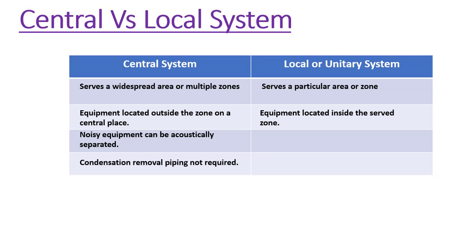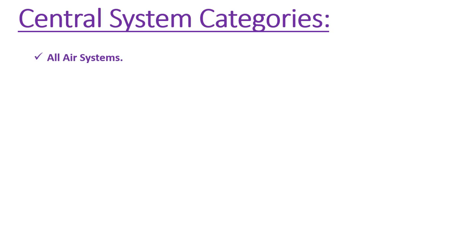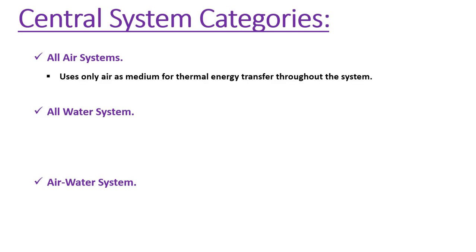Another benefit of central systems is that we don't need any piping to remove condensation formed inside the system, while in local systems we need separate pipes for condensation and also power cabling running to the zones. Central systems can be categorized into three categories: all air systems, all water systems, and air-water systems.